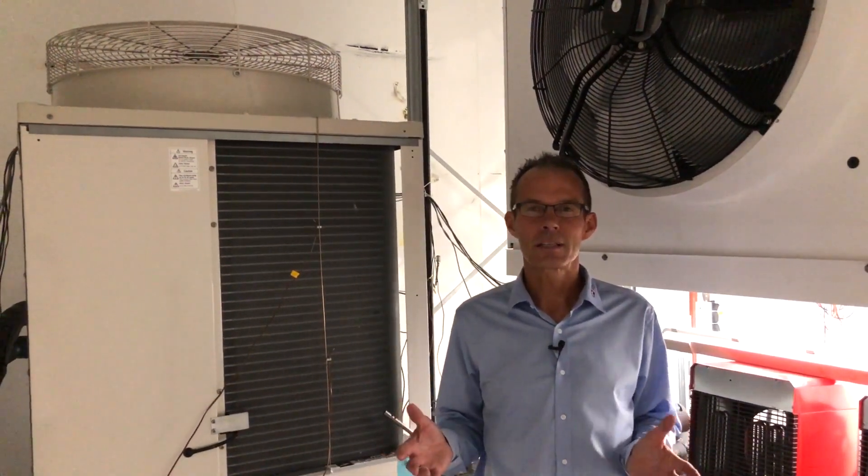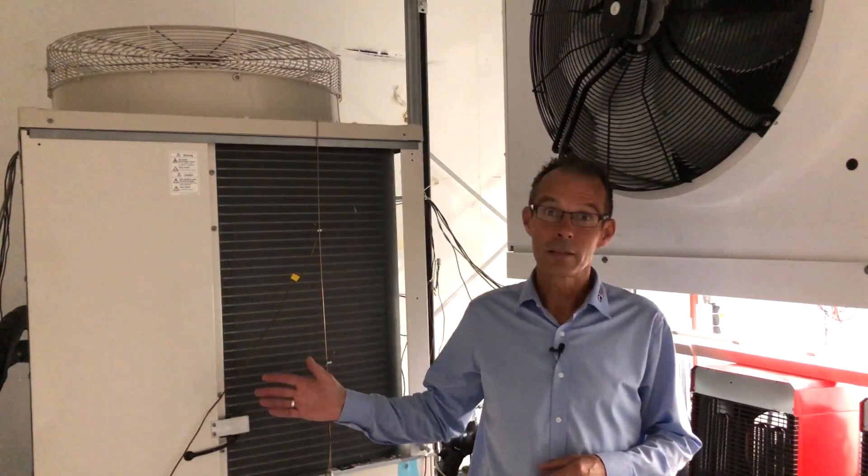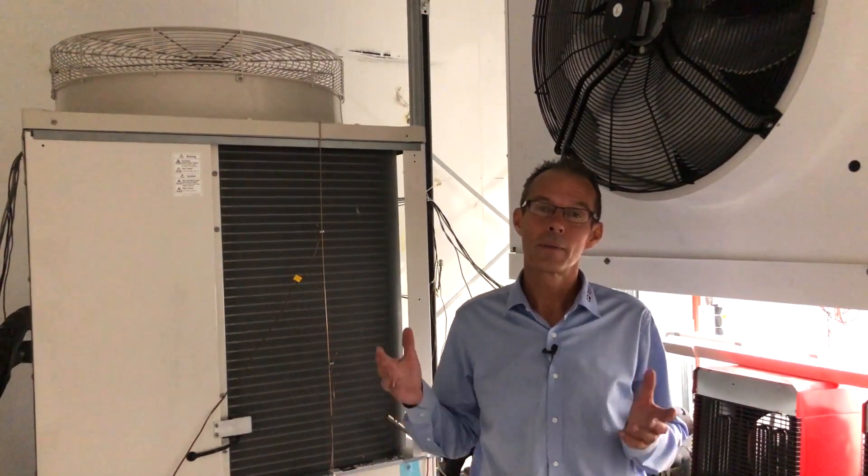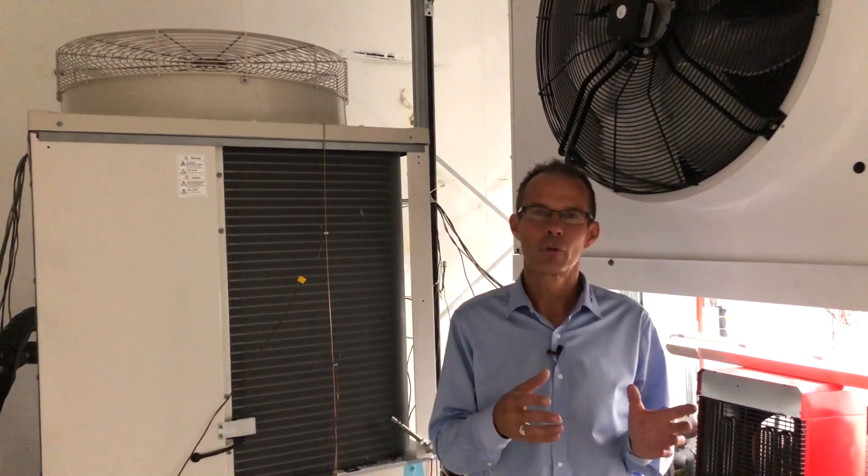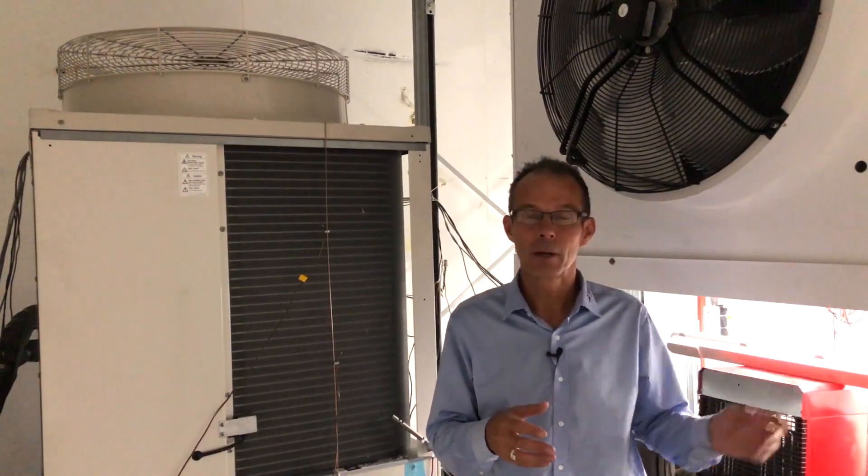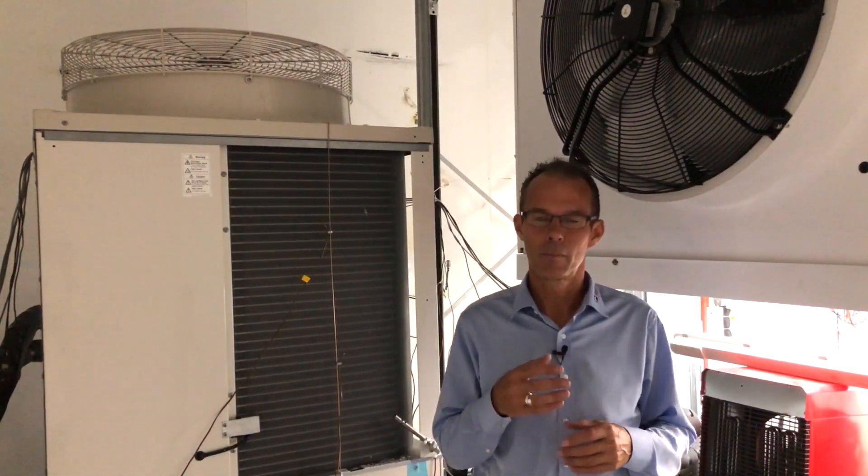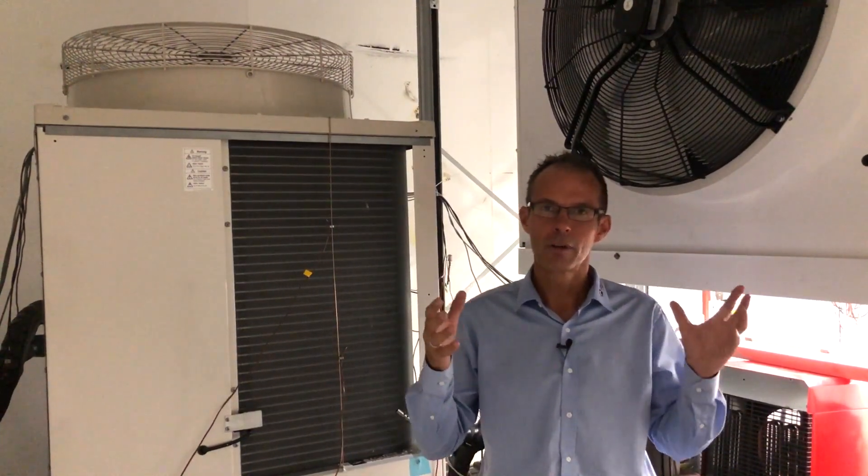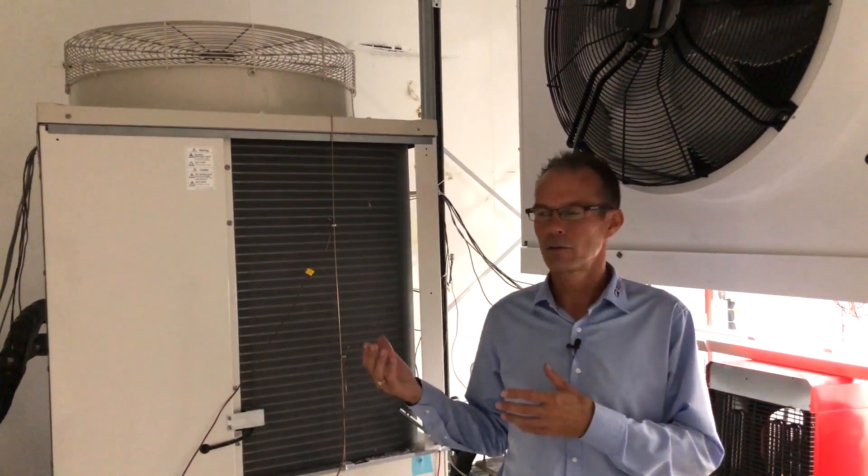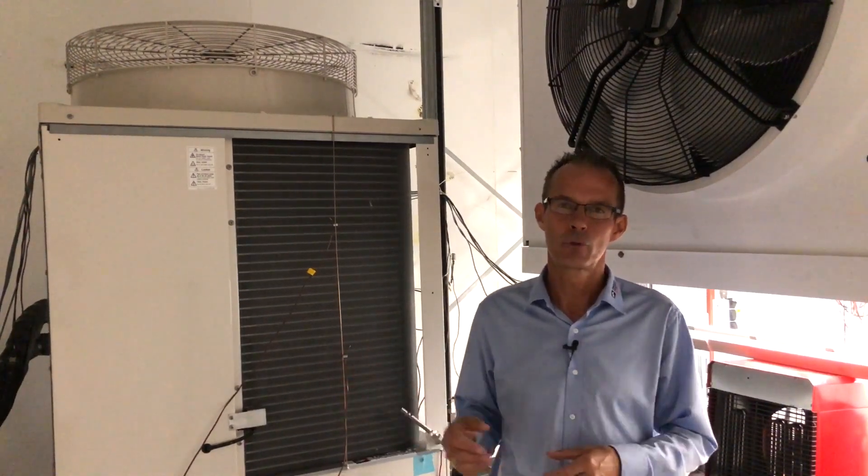This is our test cell for testing the condensing unit. We have installed the condensing unit within the room and the room is controlling the ambient temperature by evaporator which is removing all the produced heat from the unit. So we are controlling the ambience to establish the right ambient temperature for the unit.